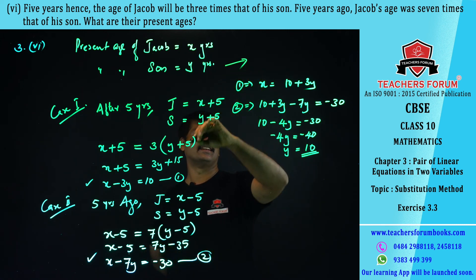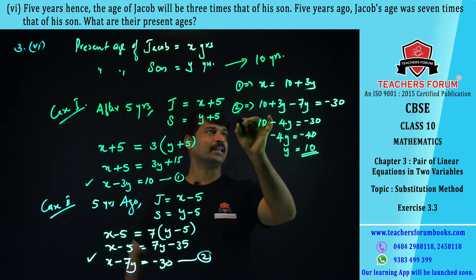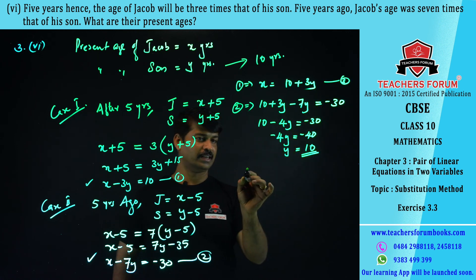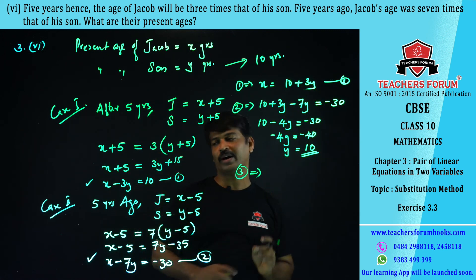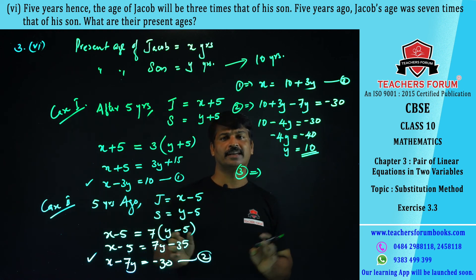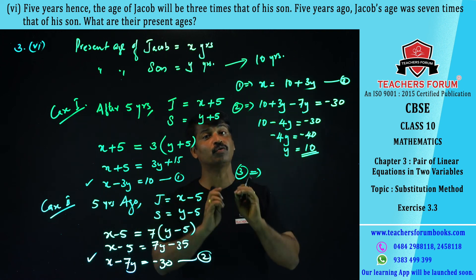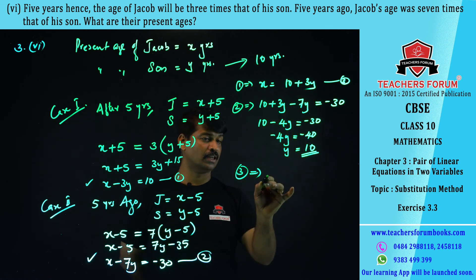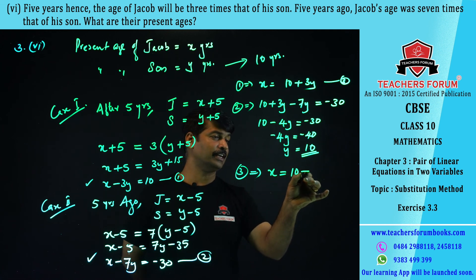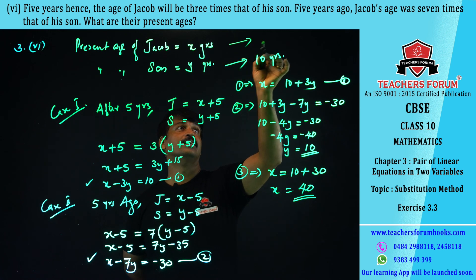Substituting y = 10 into equation number three: x = 10 + 3 × 10 = 10 + 30 = 40. So x = 40. The age of the father (Jacob) is 40 years.